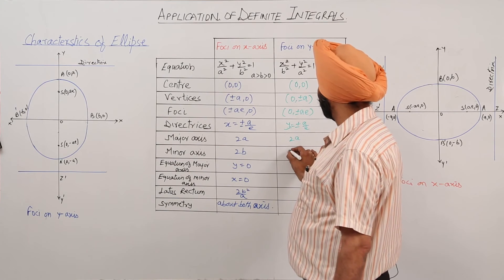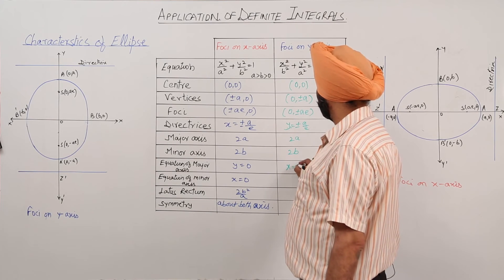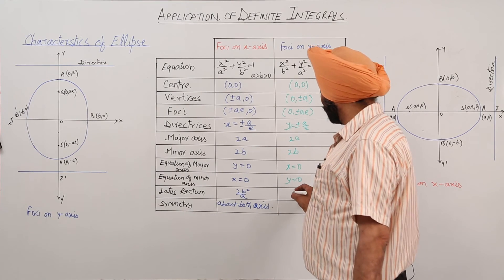Minor axis: 2b. Equation of major axis: x is equal to 0. Equation of minor axis: y is equal to 0. Latus rectum: same, 2b square upon a.